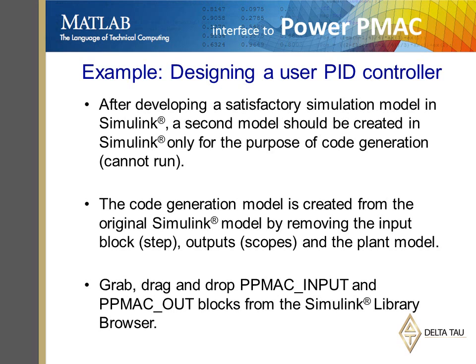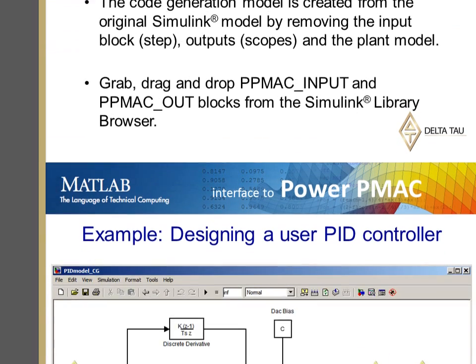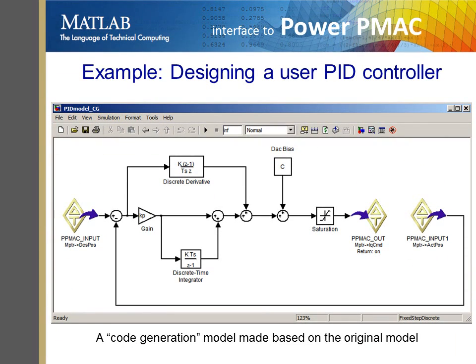In the next step, we can use Delta Tau's input and output blocks from the library to create a new model from which C code can be generated. We use PowerPMAC's input blocks to have access to the desired and actual positions of the motor. PowerPMAC's output block is used for writing the servo command to PowerPMAC's DAC register.